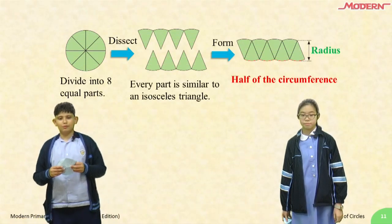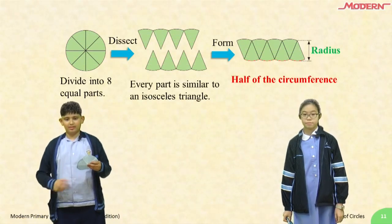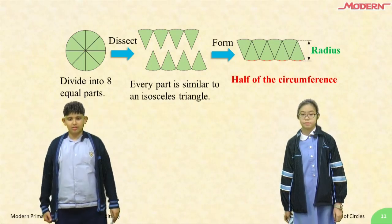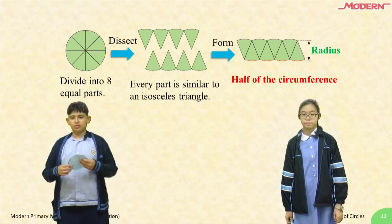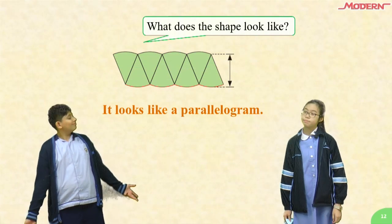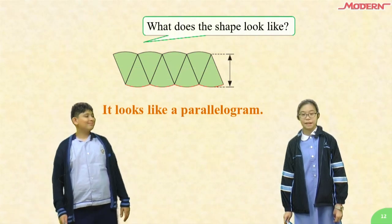Divide into 8 equal parts. Dissect. Every part is similar to an isosceles triangle. Form it into a new shape. What does the shape look like? It looks like a parallelogram.